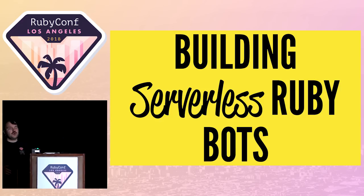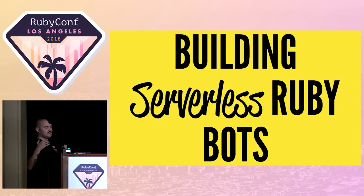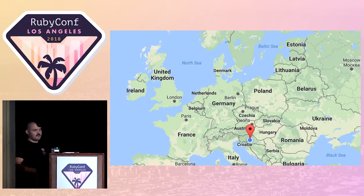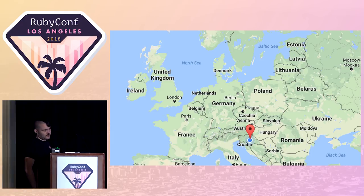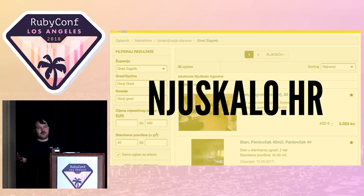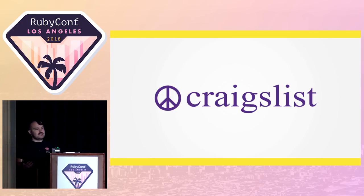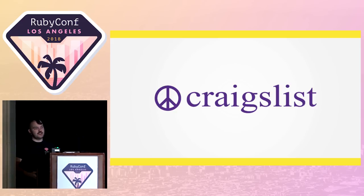Some time ago I was looking for an apartment to rent in the center of Zagreb. For those of you that don't know, Zagreb is the capital city of Croatia, which is a country located in Central Europe. If you want to rent apartments in Croatia, you check out listings on an online classifieds platform called Njushkalo — basically the same thing as Craigslist here in the US.